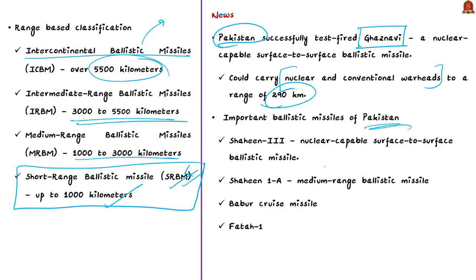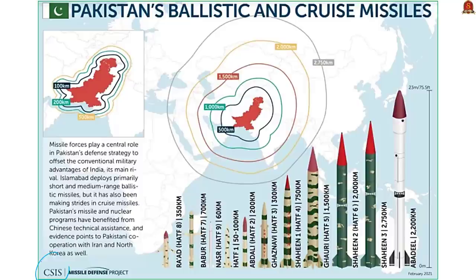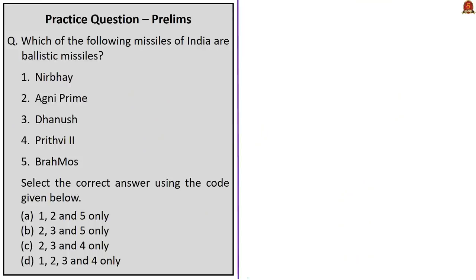Many of Pakistan's ballistic missiles were test fired in 2021. The Shaheen-1A is a medium range ballistic missile; Shaheen-3 is a nuclear-capable surface-to-surface ballistic missile. Pakistan also has the Babur cruise missile and Fatah-1 ballistic missile. A representation from the Center for Strategic and International Studies shows Pakistan's different ballistic and cruise missiles and their ranges — take note of these names as a prelims question can be asked about them. This concludes the discussion on ballistic missiles.